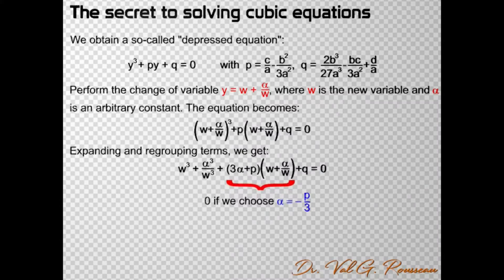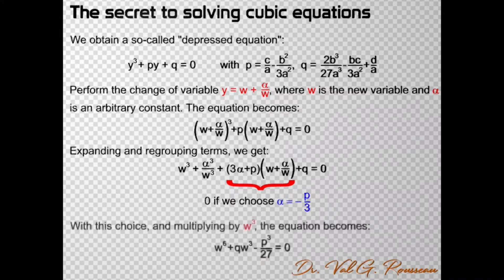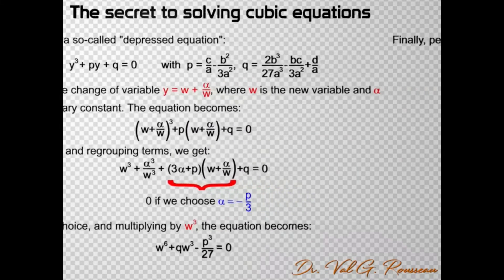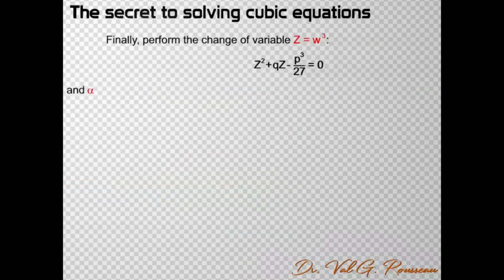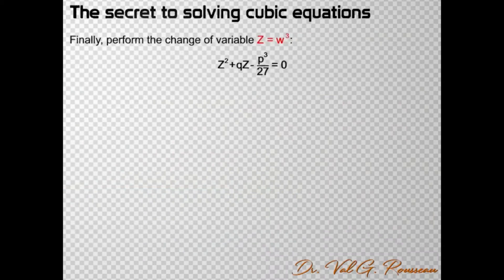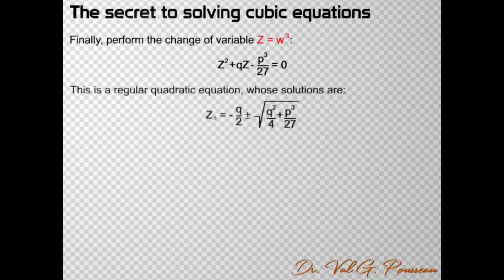With this choice, the equation turns into a trivial form of a sextic equation. Indeed, the equation is trivial to solve if we perform the last change of variable z = w³, since we end up with a quadratic equation, which I assume you know how to solve. You can easily check that it admits the two solutions z± shown here.